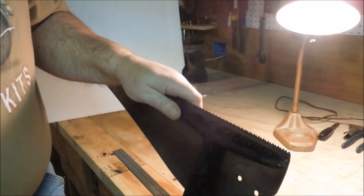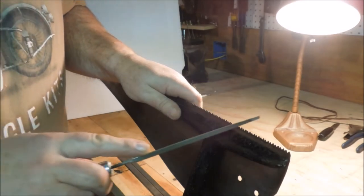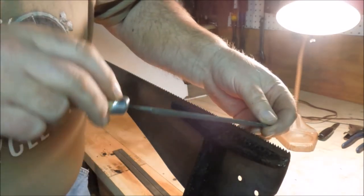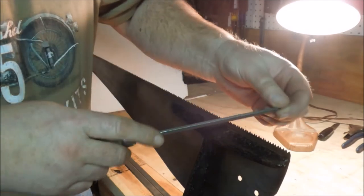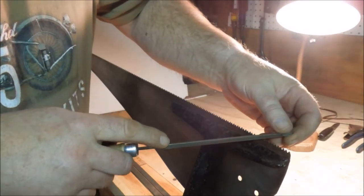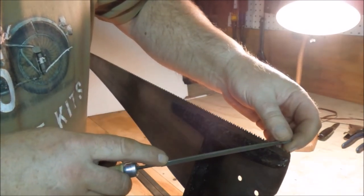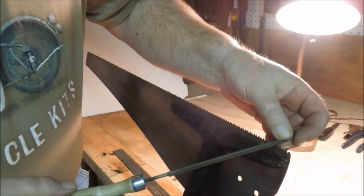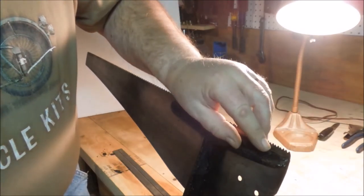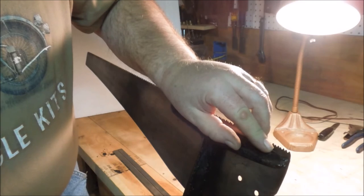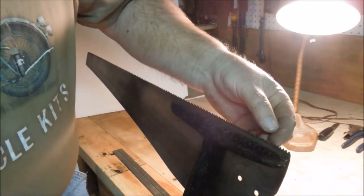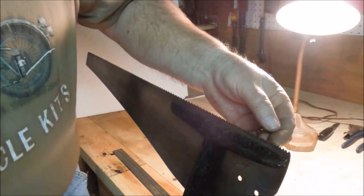This saw is filed with fleam. In other words, the teeth aren't cut straight across like the ripsaw. They are angled and angled in two different directions. With the file handle down like this, this side of the gullet, which is the gap between the two teeth, is deeper than the other side of the gullet.